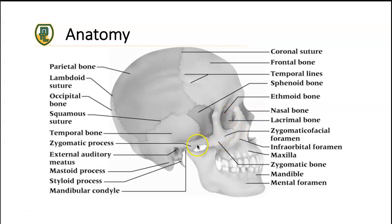Other bones come together to create this bony architecture committed to protecting the brain, including the sphenoid bone, the ethmoid bone, portions of the zygomatic arch, and the mastoid process. The skull's design is really meant to maximally protect the brain — its density in terms of the surrounding bones reduces the amount of physical forces transmitted to the actual brain, absorbing most of the shock so forces applied to the skull typically don't reach the brain.